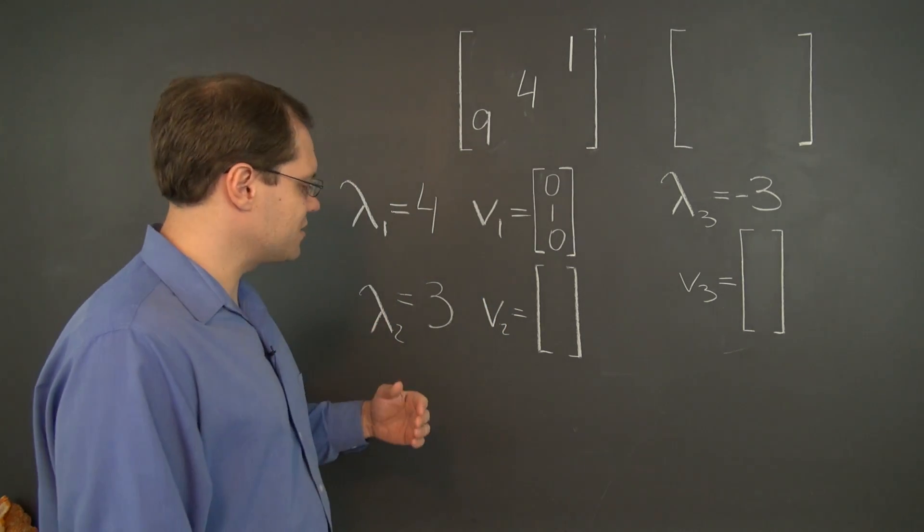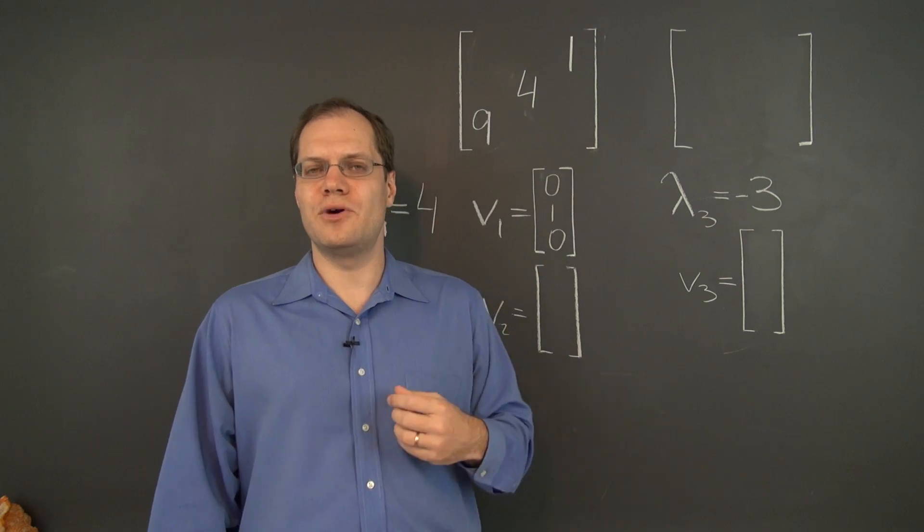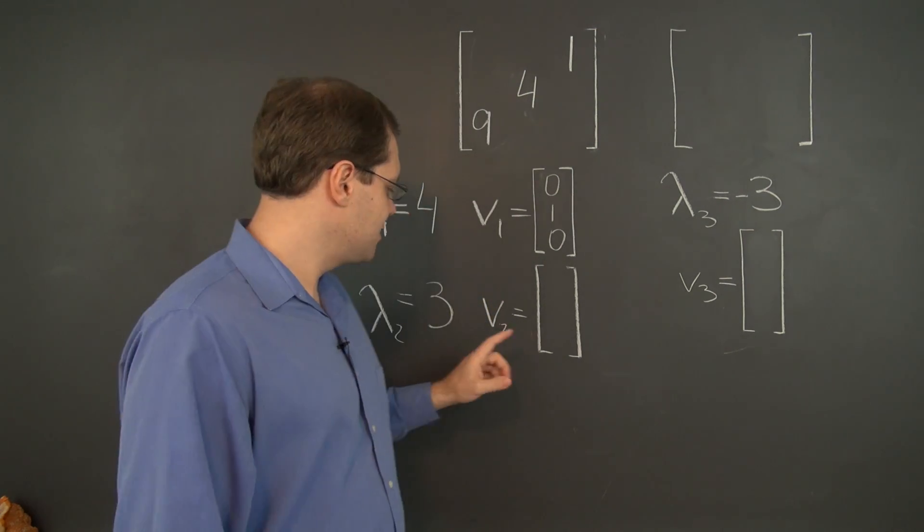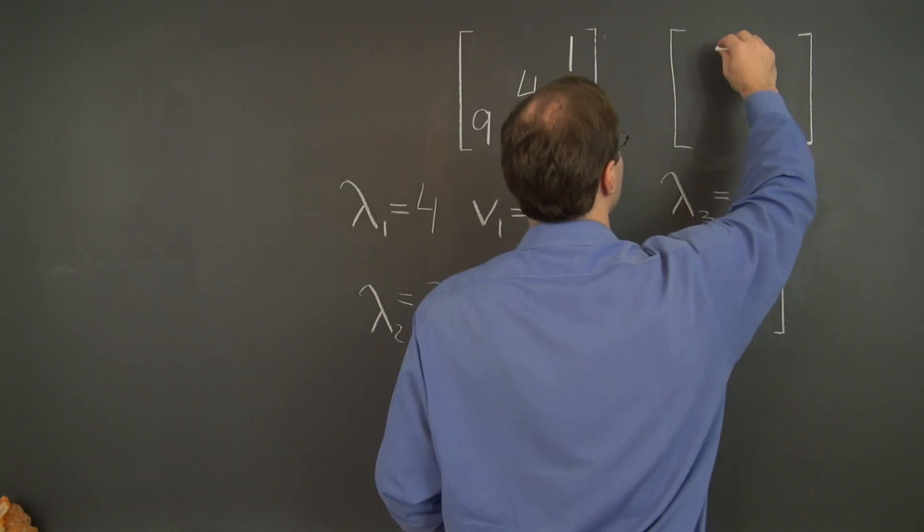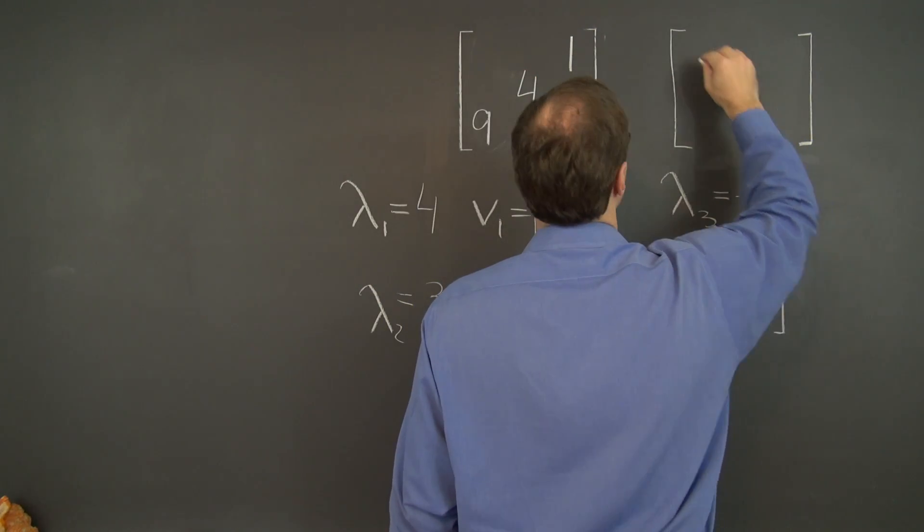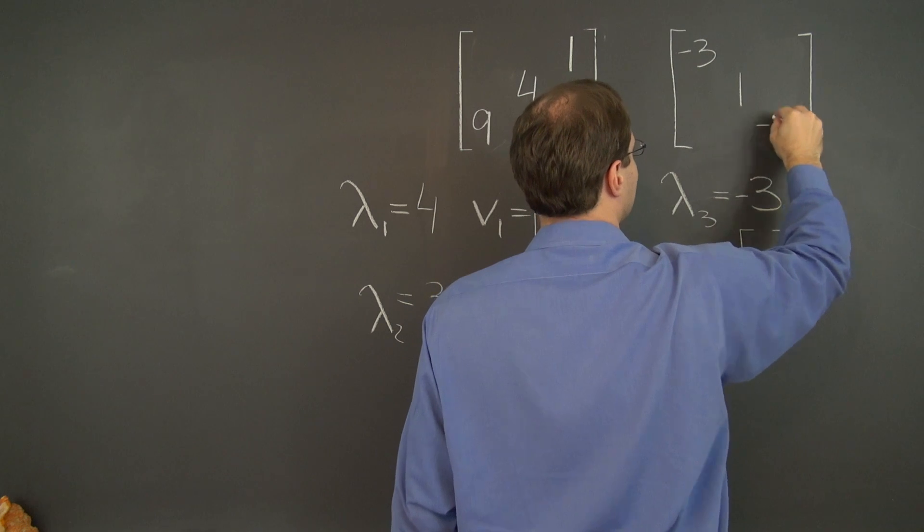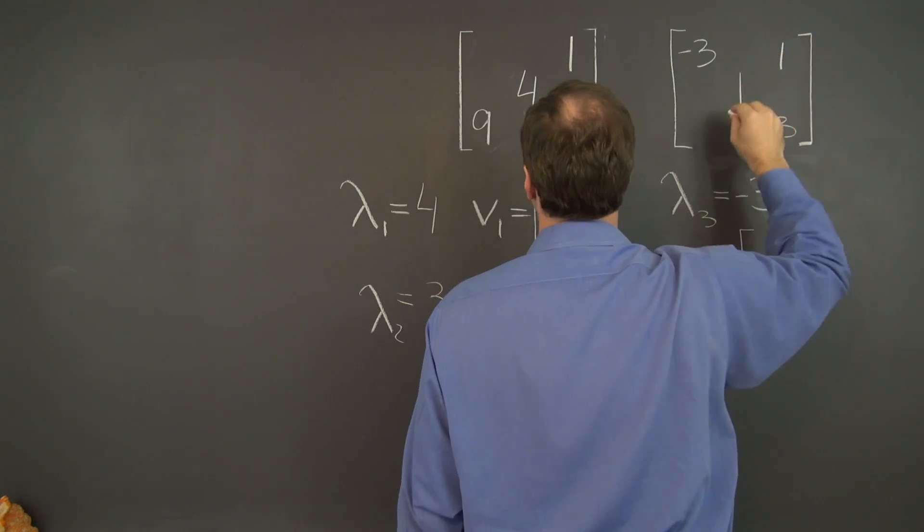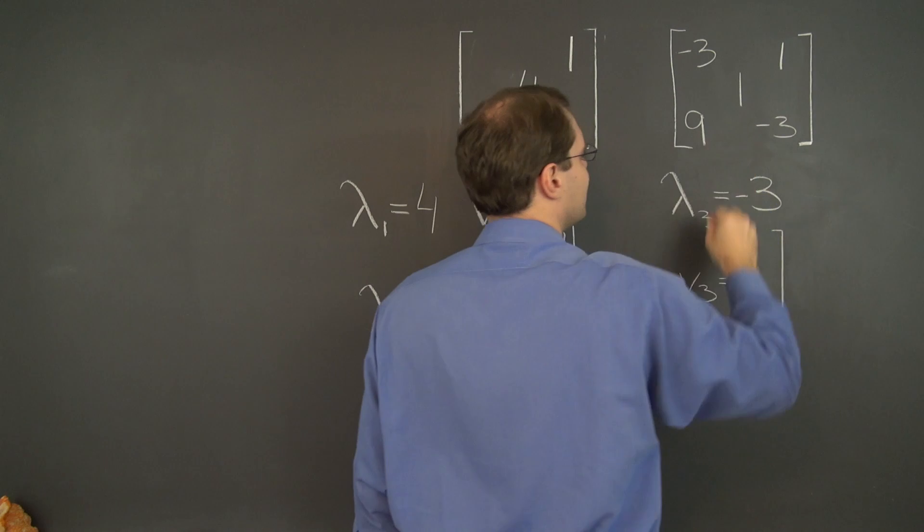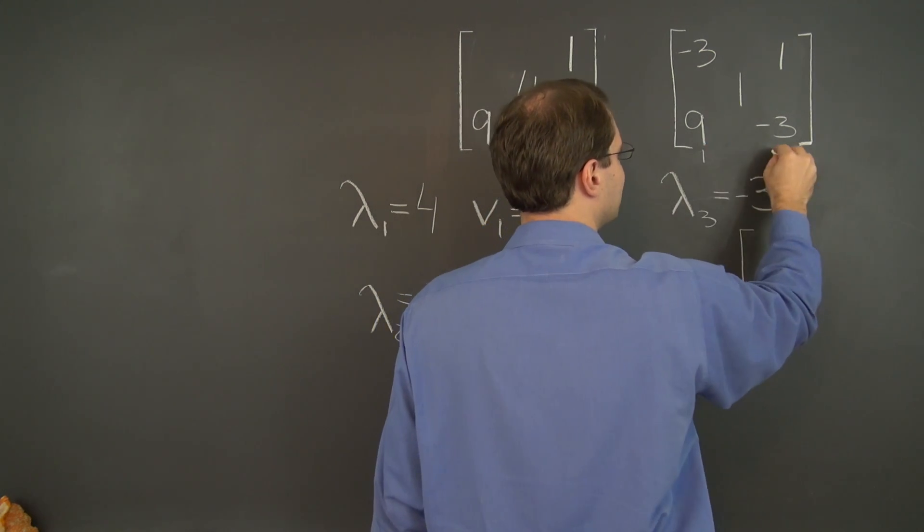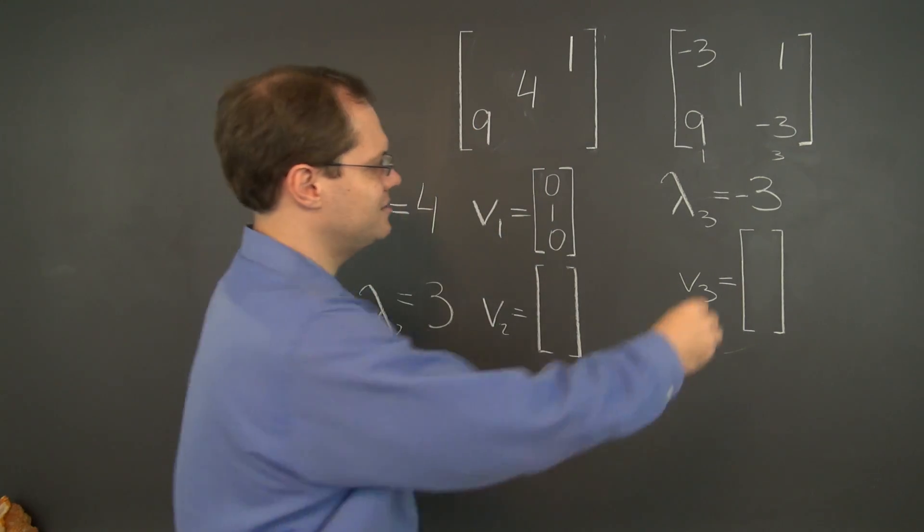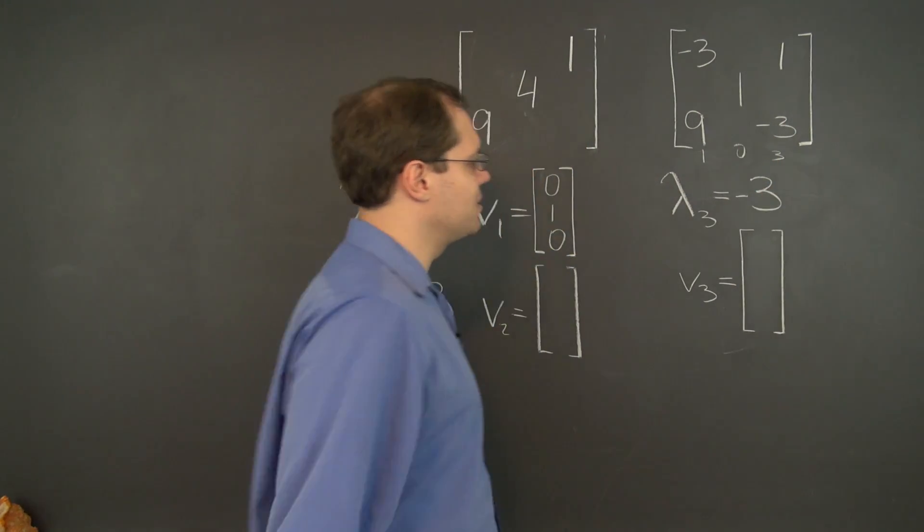And of course, the eigenvectors will require a little bit of work, but not so much work. Let's first deal with three, subtracting three from the diagonal. Let's just do it right here. One, negative three, negative three, one, nine. And of course, the eigenvector corresponding to this one is one, three, and zero in the middle. We don't need this column at all. In fact, we cannot use it. So one, zero, three.